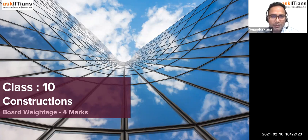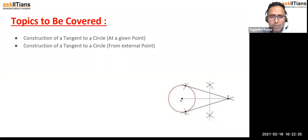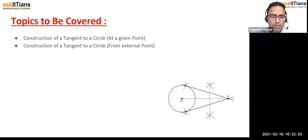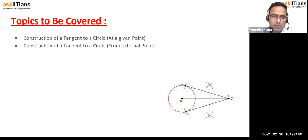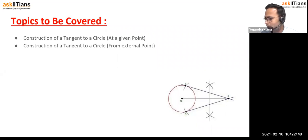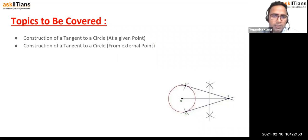So let's get started. The topics we are going to cover today are pretty easy and very easy to understand. The two topics are: construction of a tangent to a circle at a given point on the circle, and construction of a tangent to a circle when the point is outside the circle. The first topic is when the point is on the circle itself, and the second is when the point is not on the circle.